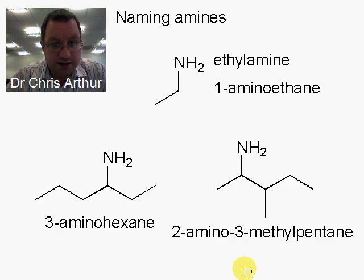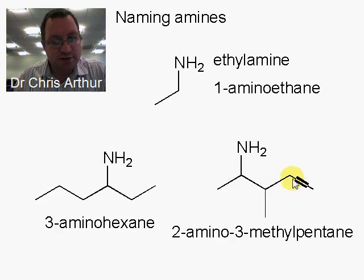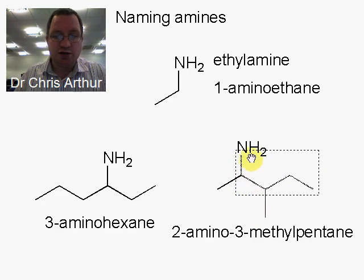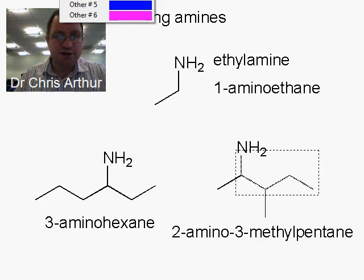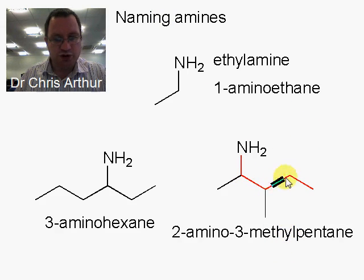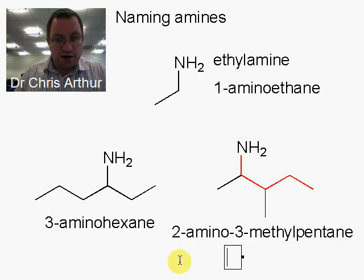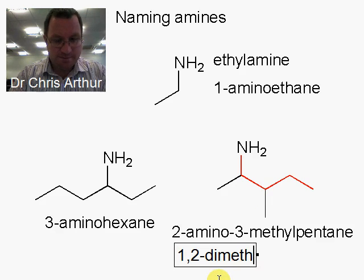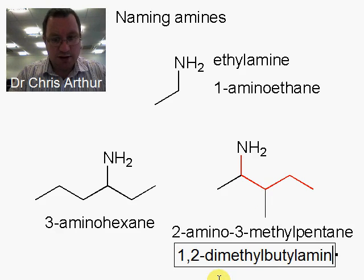The other way of naming these is to look for the longest single chain that has the amine at the end of it and then number that. It's a much more complicated system, and I'll just give you one example because you may meet it, but I'm not going to ask you for it on an exam. The longest chain connected here has four carbons, and we have two methyl groups off of it. So this is 1,2-dimethylbutylamine.